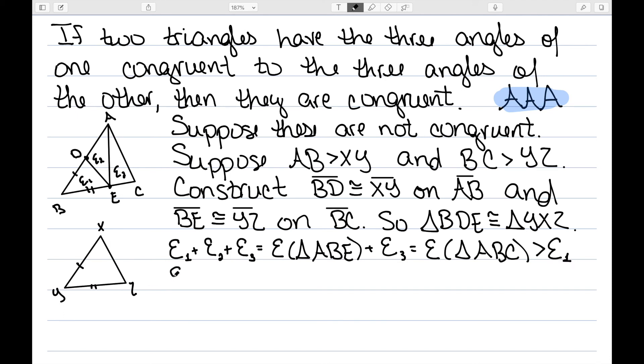I also know that the excess of triangle ABC is equal to the excess of triangle XYZ, since these two had the same angles. So their angle sum will be the same and the difference from 180 will be the same.